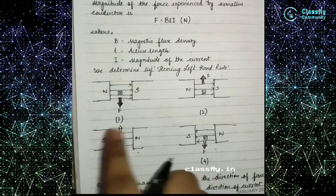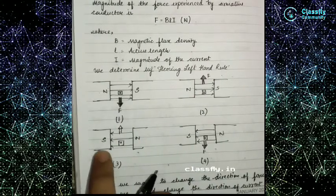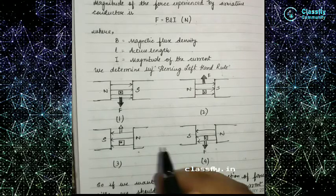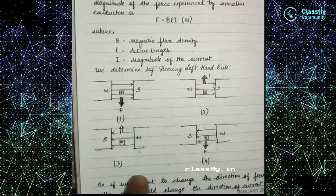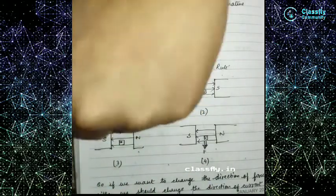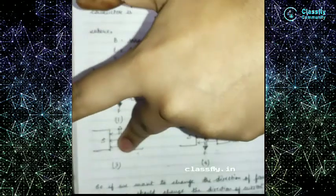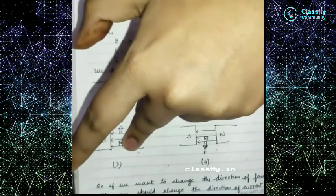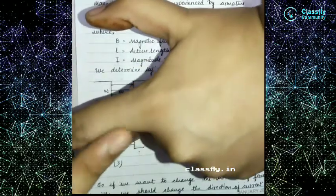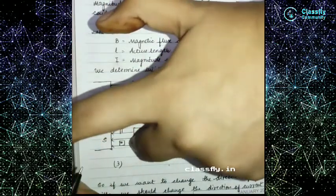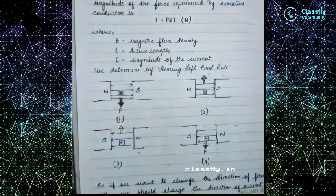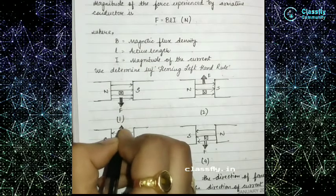Now the pole settings are changed — south is on one side and north on the other — but the current is still going into the paper. Applying the left hand rule: current into the paper, magnetic field in the new direction, the thumb shows the force is now in the upward direction.